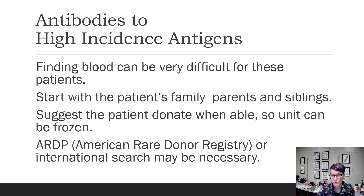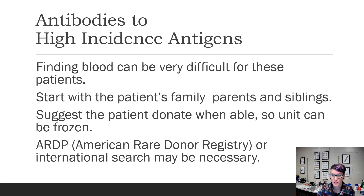Finding compatible blood for these patients can be extremely difficult. We usually start with the patient's family — ask the patient if they have any parents or siblings that can come in and get phenotyped or genotyped. We also suggest that when the patient is healthy enough, they donate so that we can freeze that unit in case they need it in the future. There's also the American Rare Donor Registry as well as some international registries that we can ask.